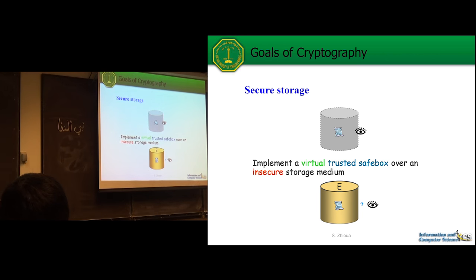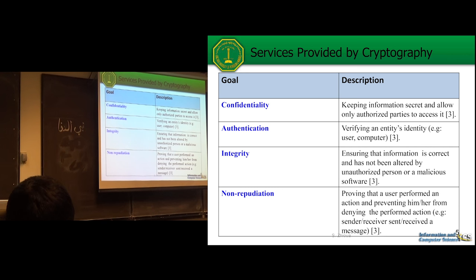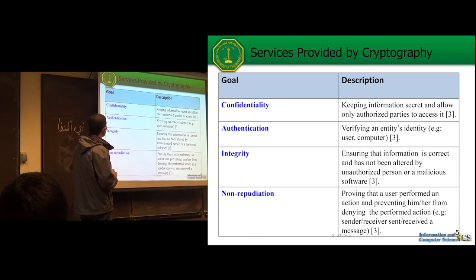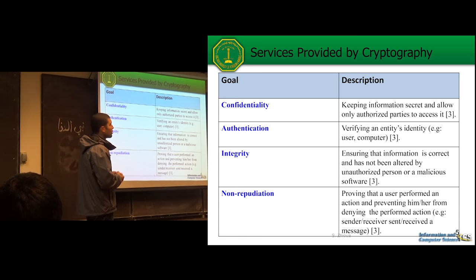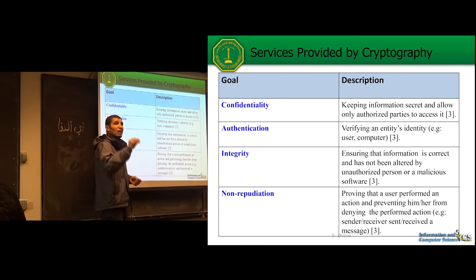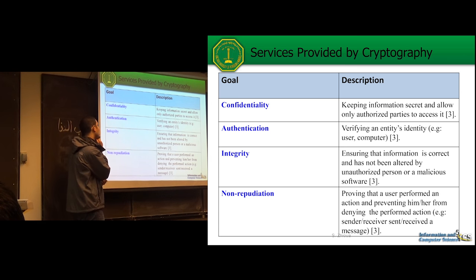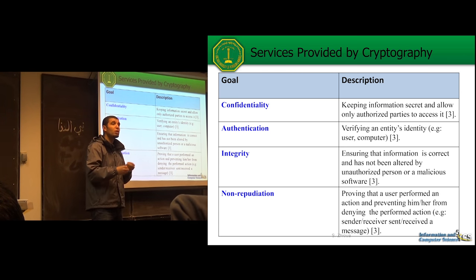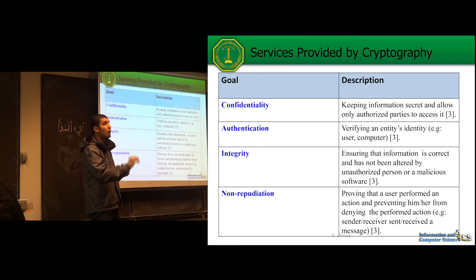So the two scenarios for using cryptography are secure communication and secure storage. The services provided by cryptography include confidentiality — keeping information secret and accessible only by authorized people — authentication — verifying the identity of users — and integrity — making sure data is modified only by authorized users.